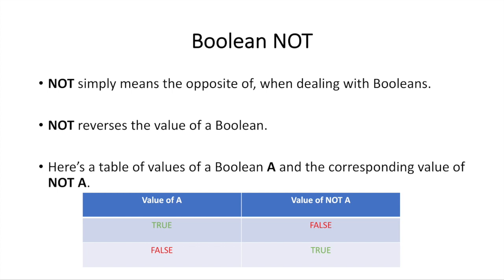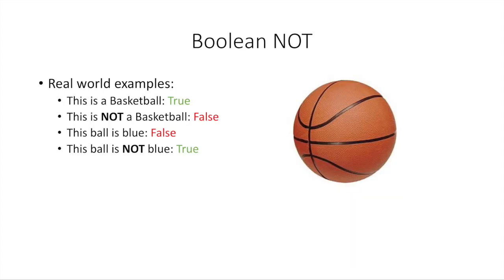So the first concept we're going to go over is called NOT. NOT simply means the opposite of when dealing with Booleans. NOT is a concept that just reverses the value of a Boolean. I made a little table for you of the value of A and the corresponding value of NOT A. So if A, whatever condition statement A, was true, then NOT A is false. That's just the opposite. If A was false, then NOT A would be true. That's pretty simple.